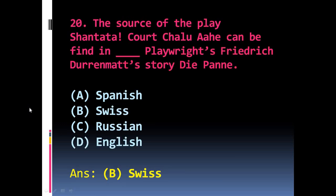Question 20: The source of the play 'Shantata! Court Chalu Ahe' can be found in the works of playwright Friedrich Dürrenmatt. Question 21: Dürrenmatt was of which nationality? The options are A) Spanish, B) Swiss, C) Russian, D) English. The right answer is B) Swiss.